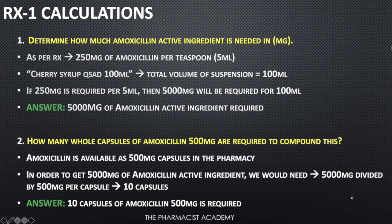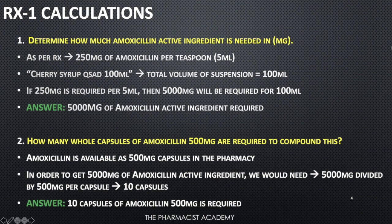Question one: determine how much amoxicillin active ingredient is needed in milligrams. As per the prescription, it's 250 milligrams of amoxicillin per teaspoon. This is why it's very important to know conversions — what a teaspoon means, tablespoon, fluid ounce — make sure you memorize those. Cherry syrup QS to 100 ml simply means the total volume of the suspension is going to be 100 ml.